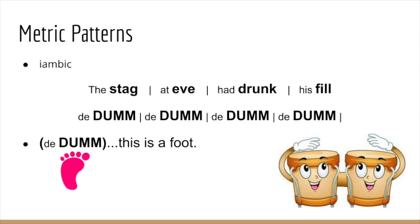Let's talk about feet — metric feet in poetry, that is. Here we see a pattern of an unstressed syllable followed by a stressed syllable. This is called an iambic pattern. Each chunk — one stressed and one unstressed symbol — is called a foot. How many feet do you see in the first line? 'The stag at eve had drunk his fill.' Correct — there are four feet: 'The stag,' one; 'at eve,' two; 'had drunk,' three; 'his fill,' four. Since they follow the pattern of unstressed followed by stressed, we call these iambic feet.